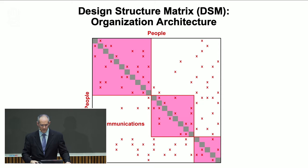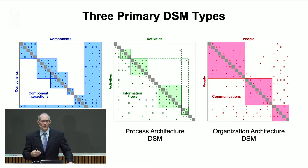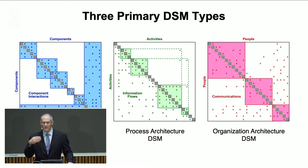We make these models or maps using this method called Design Structure Matrix. It operates in multiple domains — the three primary ones being product, process, and organization. Now I'd like to give you an example of each one and show you exactly how we do this in each of the three domains, starting with the process domain.